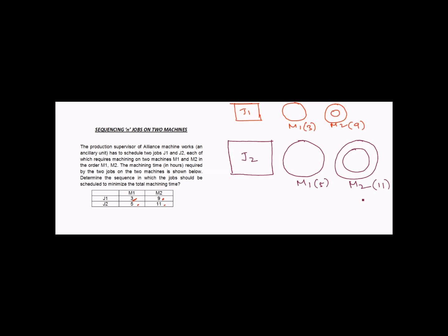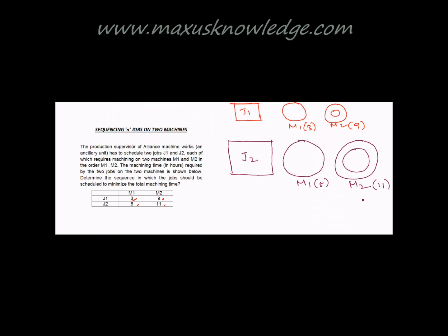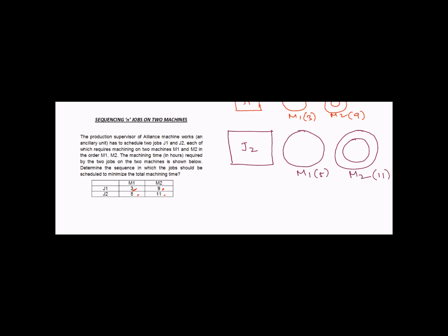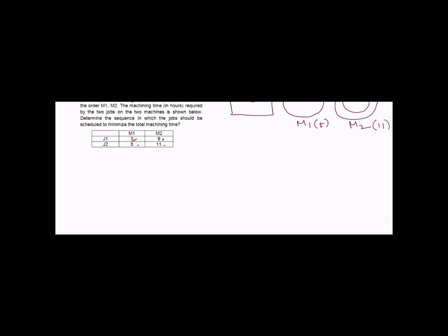Since the number of jobs to schedule is only two, we will use the graphical method to solve this. I would like you to understand how the jobs will be scheduled on the time graph and how we finally conclude which job should be processed first. Let us first consider the sequence J1 then J2.